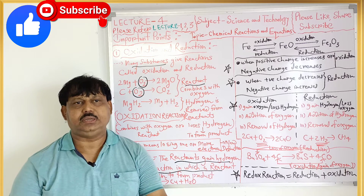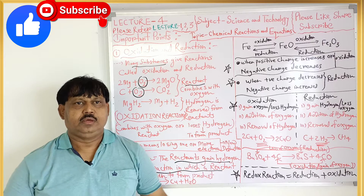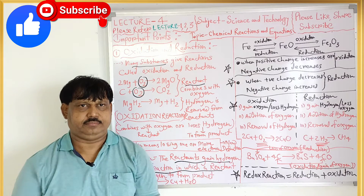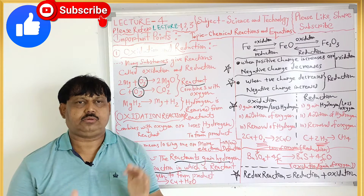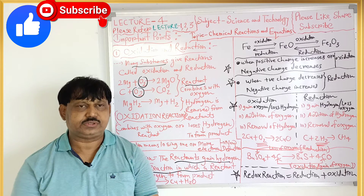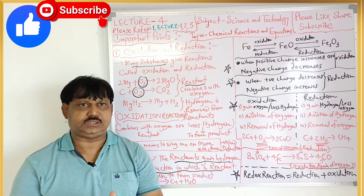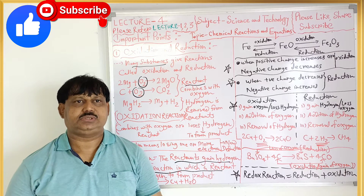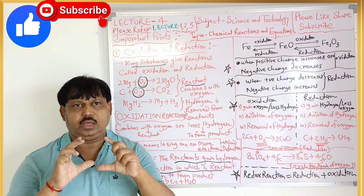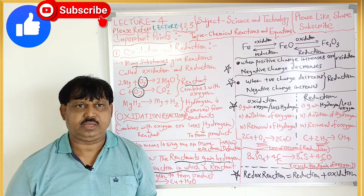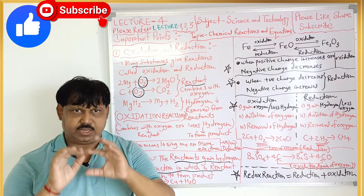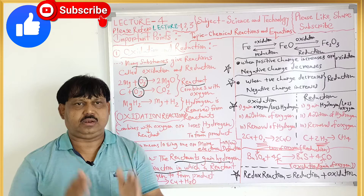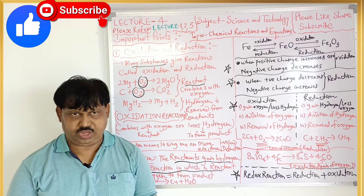In lecture number one, we have studied about changes and the basic concept of chemical reactions and chemical equations. In lecture number two, we have studied about types of chemical reactions — endothermic and exothermic — and the difference between them, which is an important question. In lecture number three, we have studied in detail about exothermic and endothermic reactions, double decomposition reactions, and most importantly, factors affecting the rate of chemical reaction.